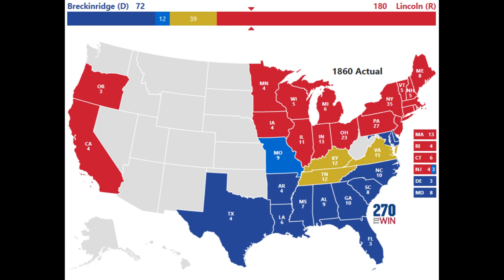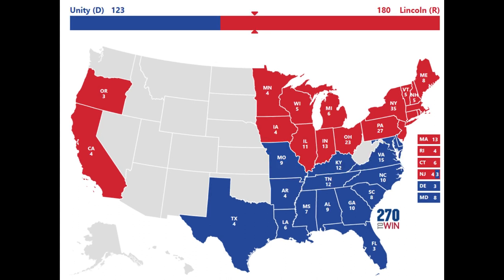For the purposes of this hypothetical, let us assume that all of these issues could be overcome — that there would be no defections from Douglas or Bell to Lincoln. In other words, that all the votes for a candidate other than Lincoln voted for this unity ticket instead. In that case, starting out, all electoral votes for the other three candidates equals 123, still short by 29. However, two states do flip when we add all the votes together.